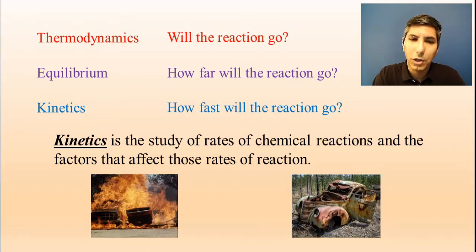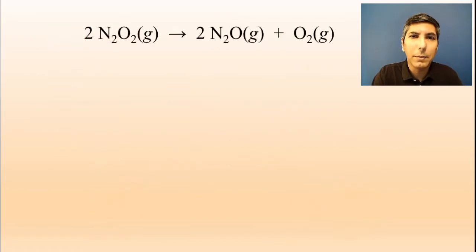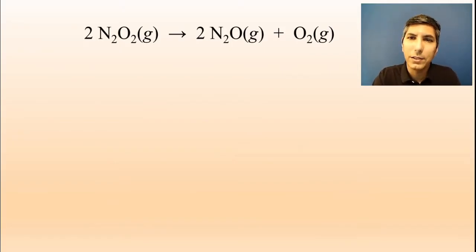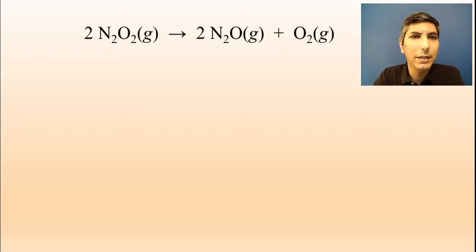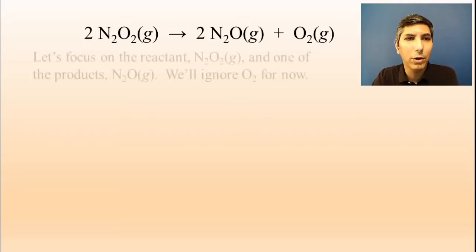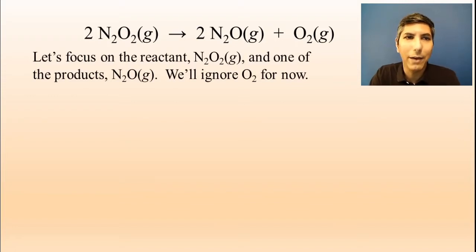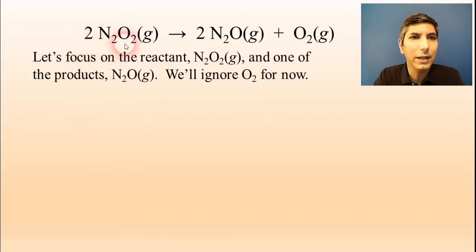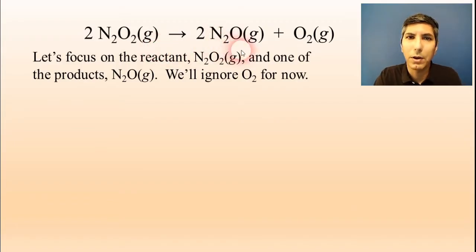Before we jump into this, it's probably good to learn about some of the definitions and how we actually measure and talk about the rate of reaction. We're going to look at this balanced equation: 2N₂O₂ decomposes into 2N₂O and O₂. We're going to focus on the reactant, dinitrogen dioxide, and also on the dinitrogen monoxide product. For right now, we're going to ignore the oxygen and come back to that a little bit later.